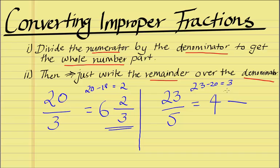We then write our remainder 3, that we just got here, over the division sign, and then we just simply carry over our original denominator. So we got 4 wholes and 3 fifths.